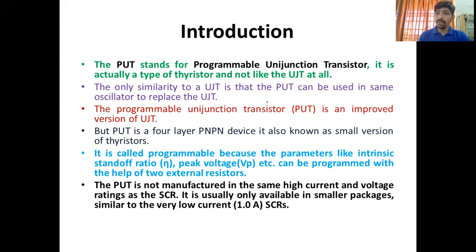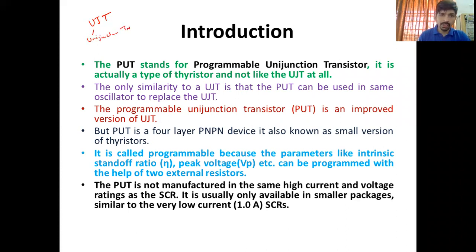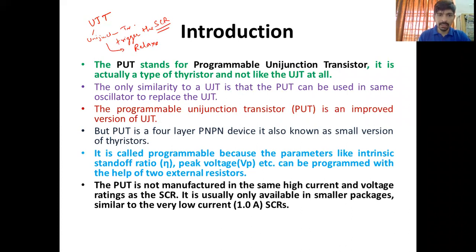Last time we discussed the topic of UJT — it is a Unijunction Transistor which is used to trigger the SCR. SCR को trigger करने के लिए काम आता था और इससे हम relaxation oscillator का भी काम ले सकते हैं, यह already हम discuss कर चुके हैं previous videos में।